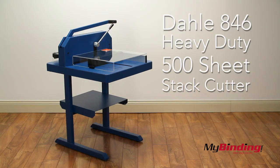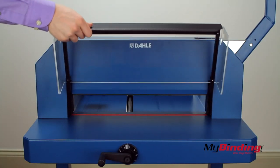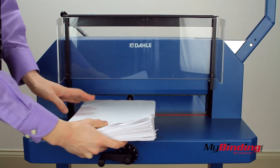Welcome to MyBinding video. This is the Dahle 846 heavy duty 500 sheet stack cutter. To start, lift the protective shield and insert your ream of paper, then close the shield.